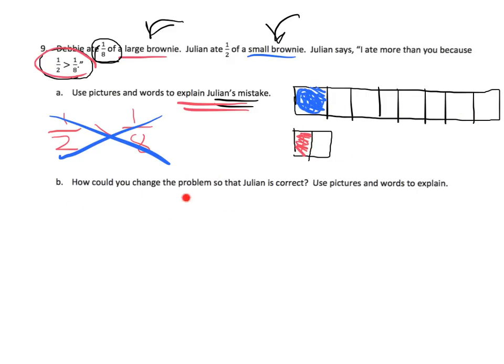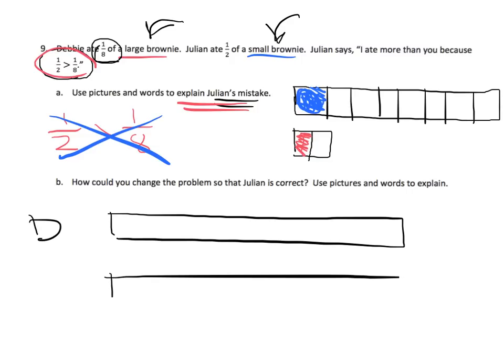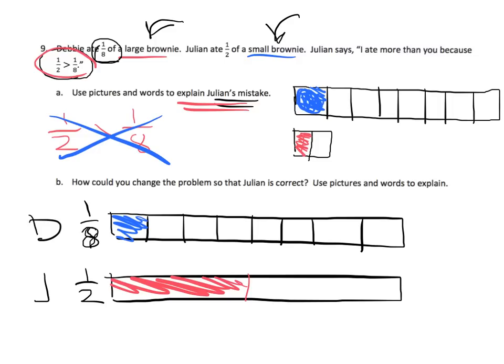Now how could you change the problem so that Julian is correct? Well, I kind of said it already. We can use two brownies, one for Debbie and one for Julian, that are the exact same size. So Debbie had 1/8 and Julian had 1/2 and here's Debbie's. There's her 1/8 and then here is Julian's 1/2. There you go. So now you can see that 1/2 is indeed bigger than 1/8.